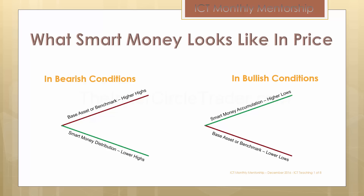The opposite is seen in bearish conditions. When the underlying benchmark is moving higher, the heavy distribution taking place is because smart money is selling — they don't want to hold for higher prices. Just because the Dow Jones is making higher highs doesn't always mean underlying strength; it could be a heavy distribution cycle. You'll see that with heavy numbers of stocks failing to make higher highs, or the S&P 500 and Nasdaq composite index failing to make a higher high. When that happens, it is a warning sign that you're probably in a distribution cycle.